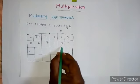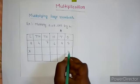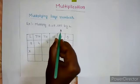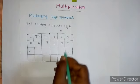4 into 8, how much? 4 eights are 32, right? 32 plus 2 carry here, 34. I am going to write 4.